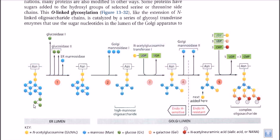So the overall procedure is: we have a protein backbone, glucose residues are cleaved first in the ER lumen, then the protein comes into the Golgi lumen where mannose residues are cleaved. As the mannose residues are cleaved, new N-acetylglucosamine residues are being attached via N-acetylglucosamine transferase activity using a UDP carrier. Then Golgi mannosidase activity continues, and finally N-acetylneuraminic acid is attached using CMP as the carrier.